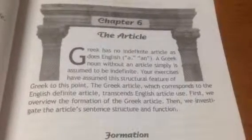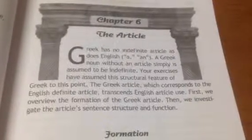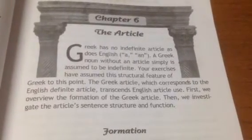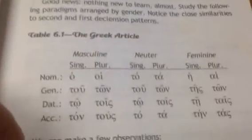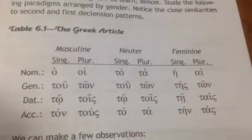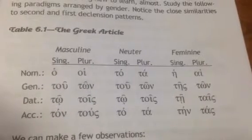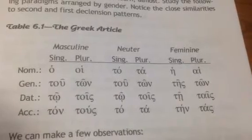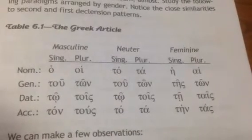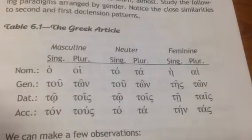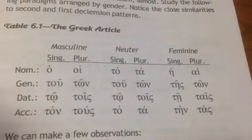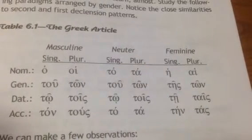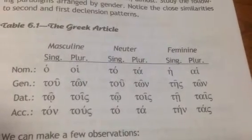Chapter six discusses the article. It's placed right between the chapters about the first declension and the third declension. This makes perfect sense because the articles only use the second declension and the first declension. These are definite articles — Greek does not have an indefinite article. For the masculine and the neuter, second declension endings are used. For the feminine article, the first declension is used — the eta pure for the singular — and the plural follows the one plural pattern.